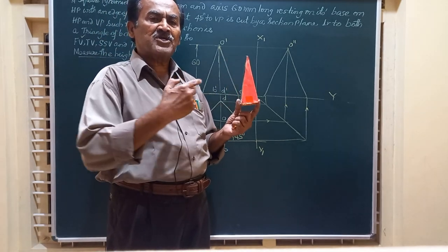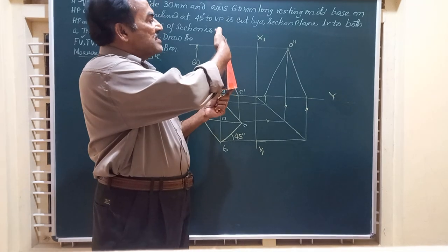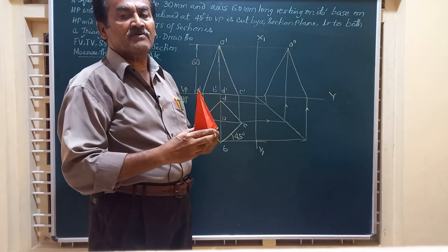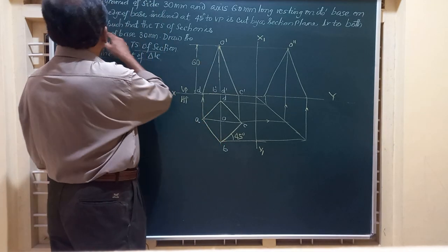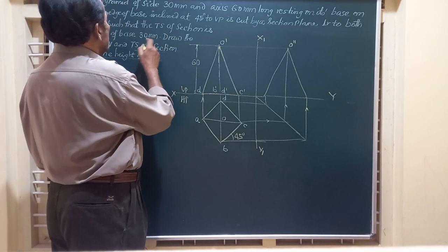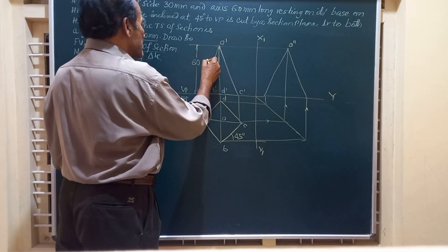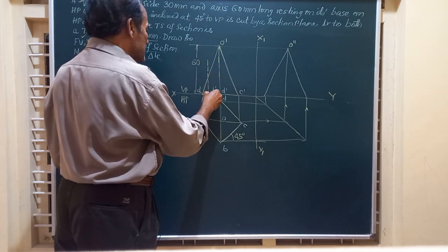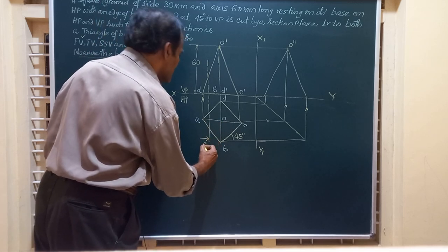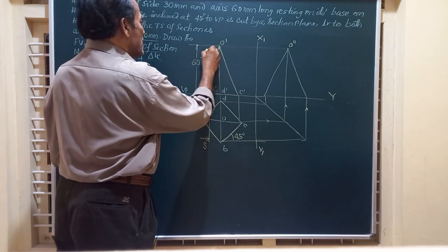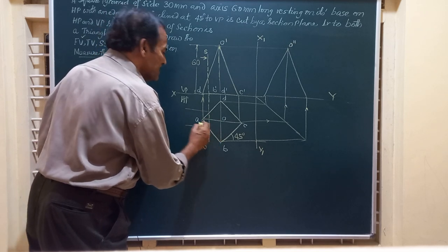The section plane cutting this solid perpendicular to both HP and VP will be seen as a line in the top view and also as a line in the front view. The true shape you are going to get is a triangle with a 30 mm side. When it is perpendicular to both HP and VP, the section plane is seen as a line in both the top view and the front view.